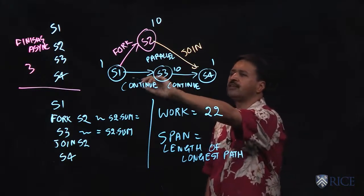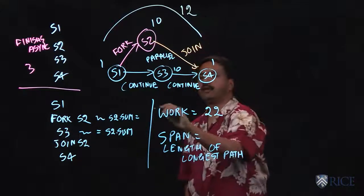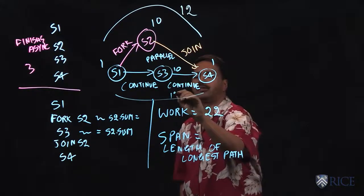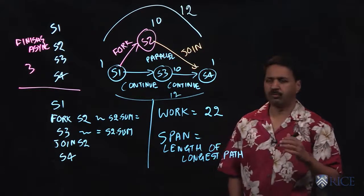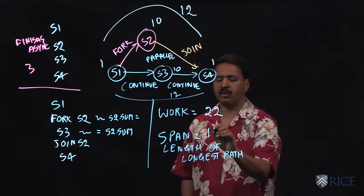We see that there's a path over here of length 12, and there's a path over here with length 12. So there are two paths with the longest length, and that can happen. But the span is 12, because it's the length of the longest path.